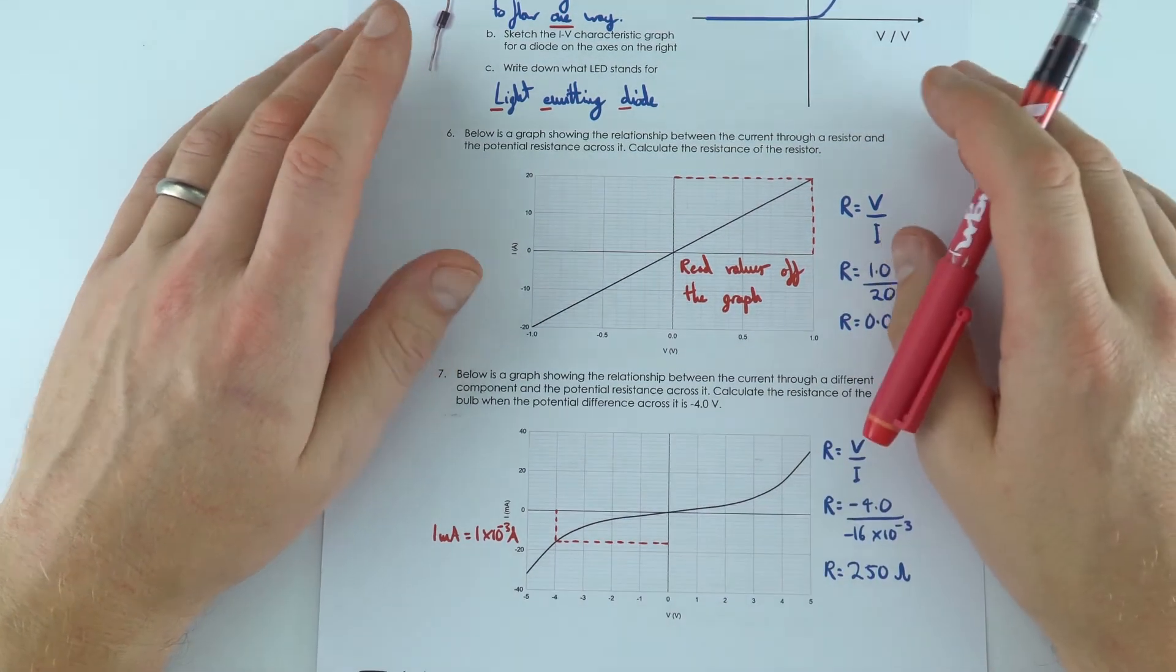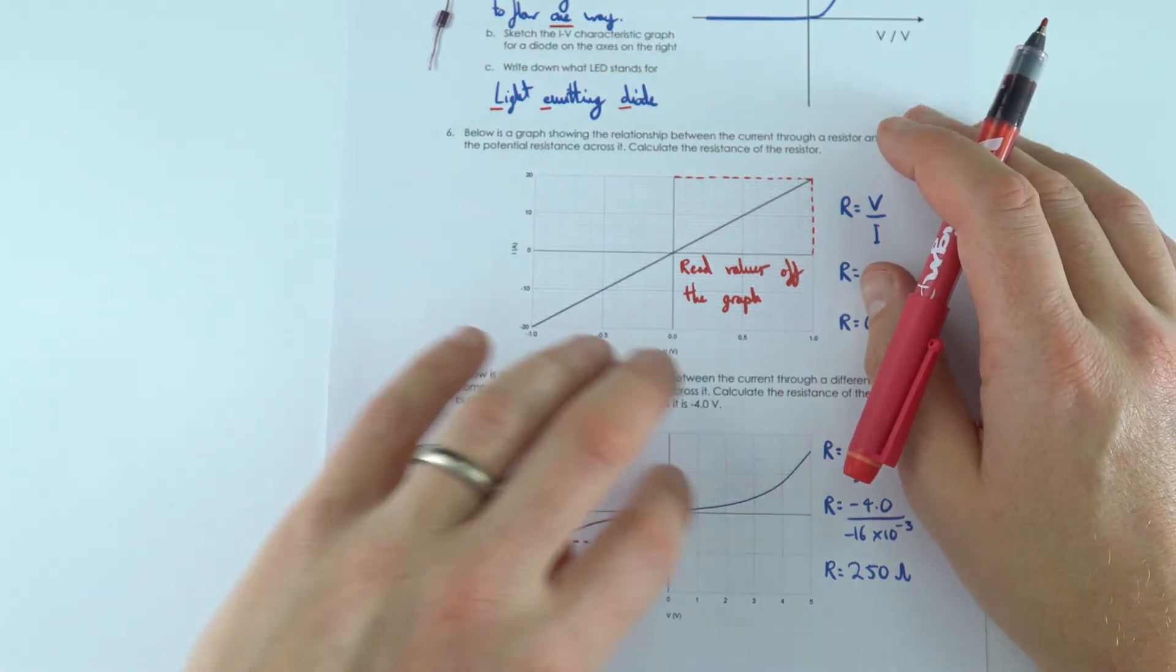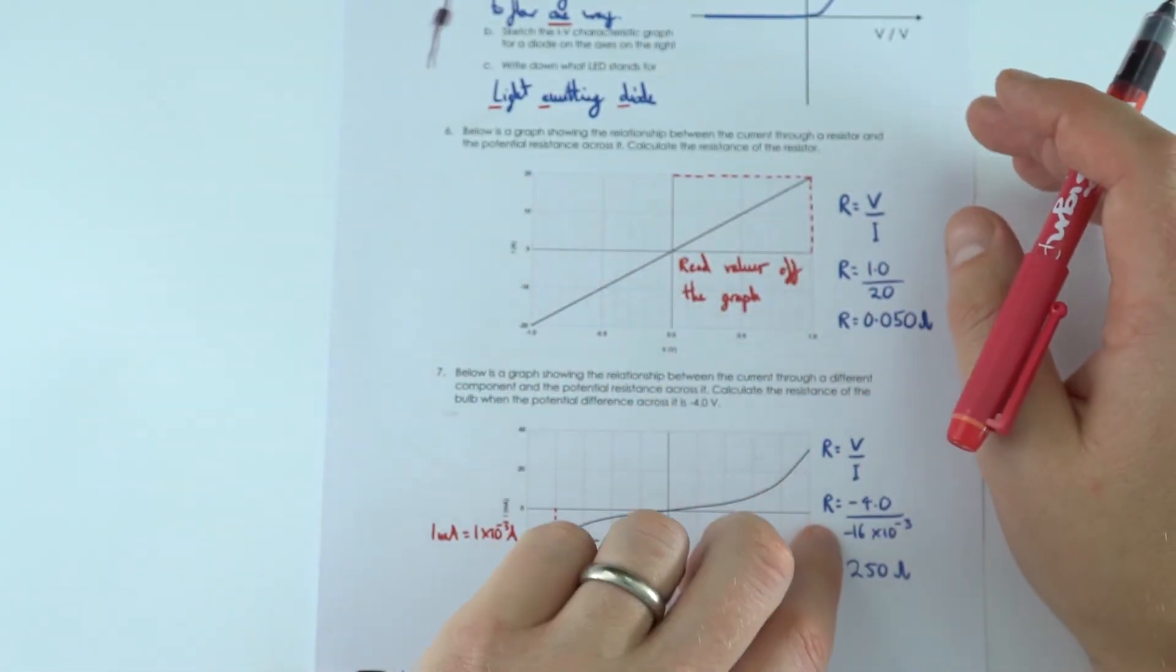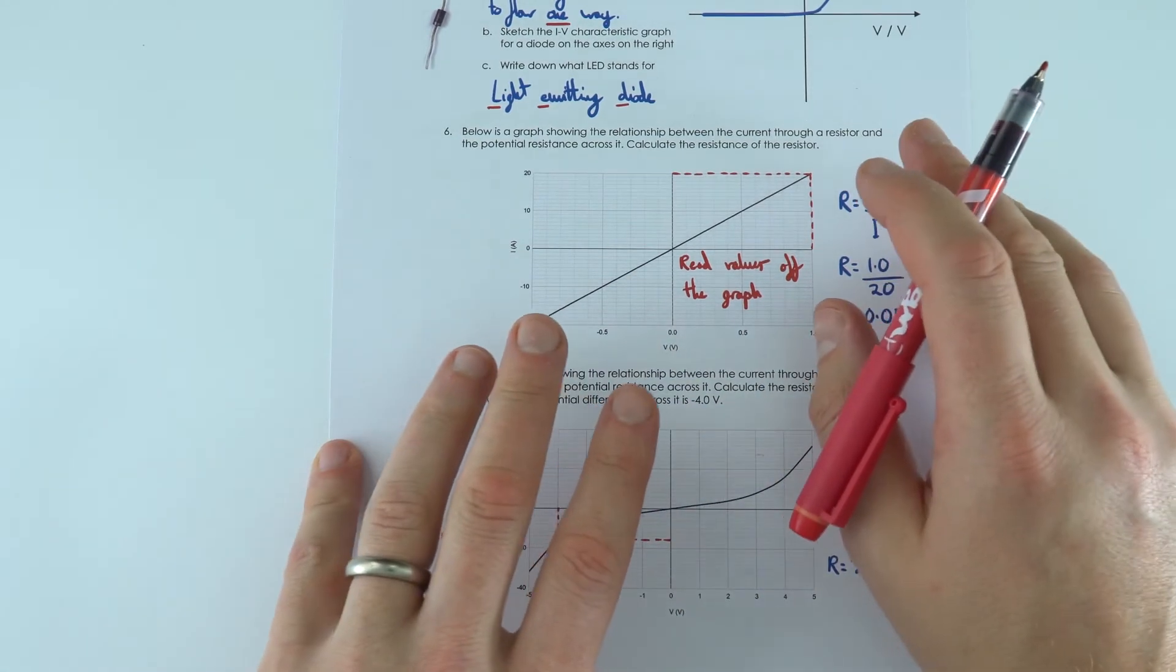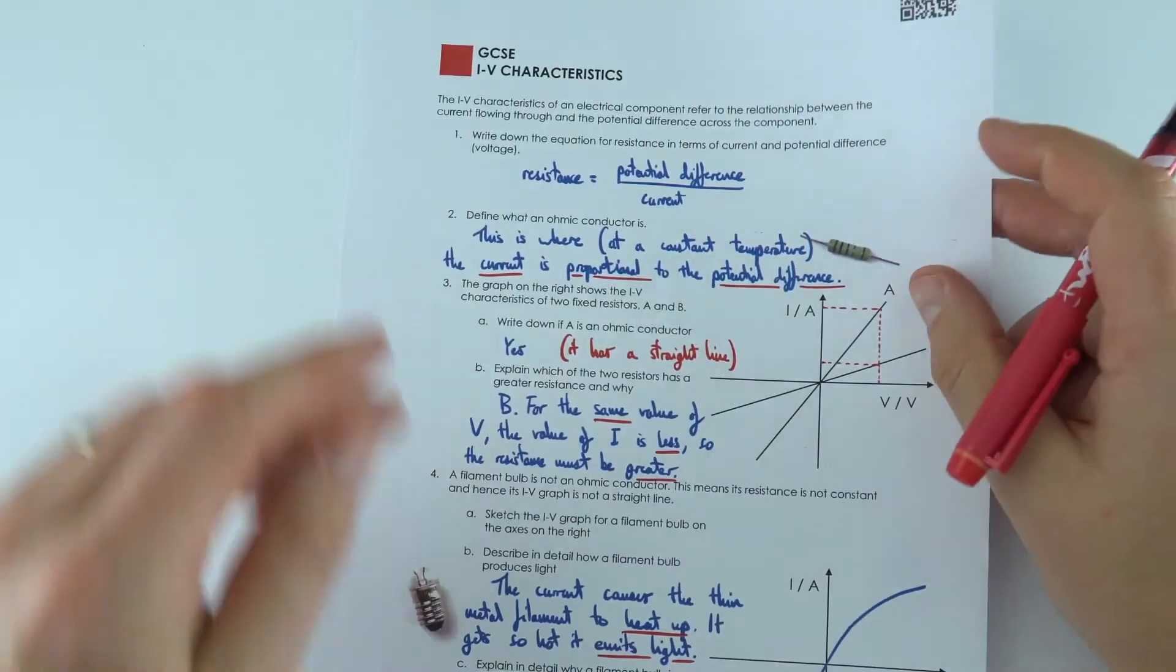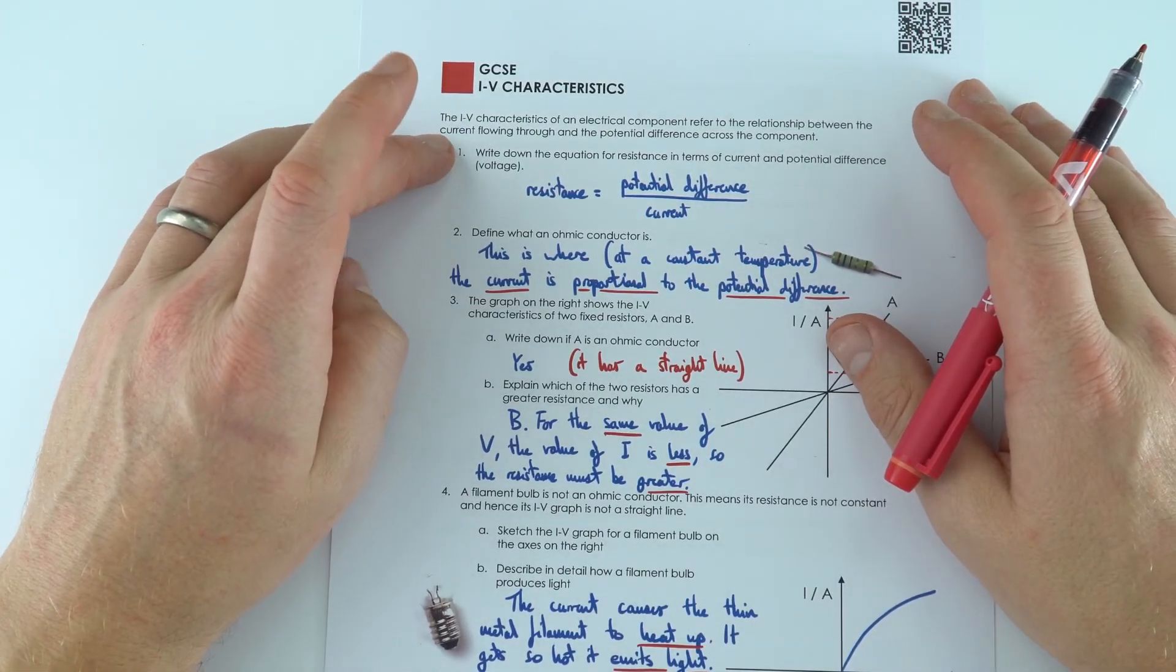So a little bit tricky there. But this is where we can actually look at the shape of the graph, read some values off it, and then use that along with the equations that we already know. So just a few introductory questions there to IV characteristics.